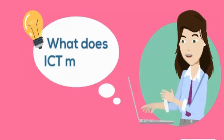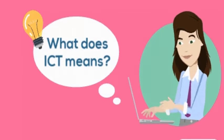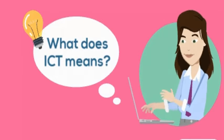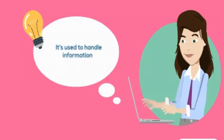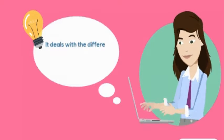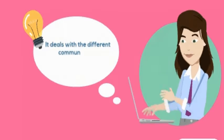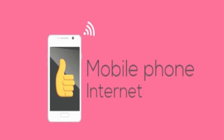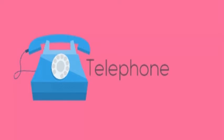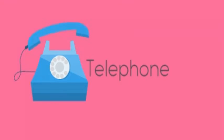What does ICT mean? ICT is used to handle information. It deals with the use of communication technology, such as mobile phones, internet, telephone, and more, to locate, save, send, and edit information.